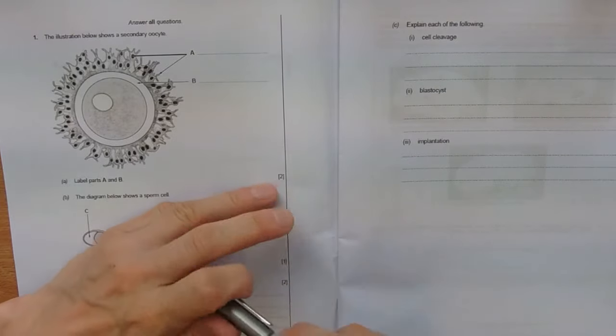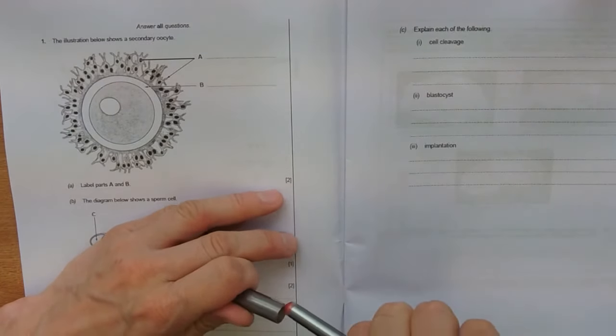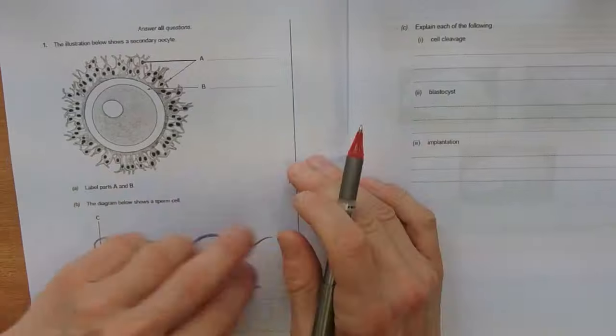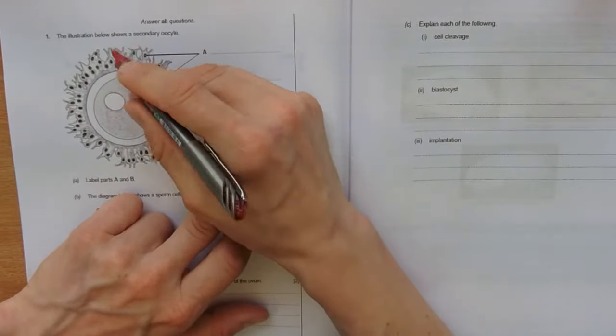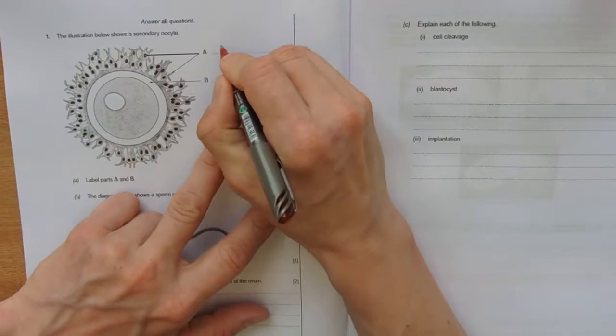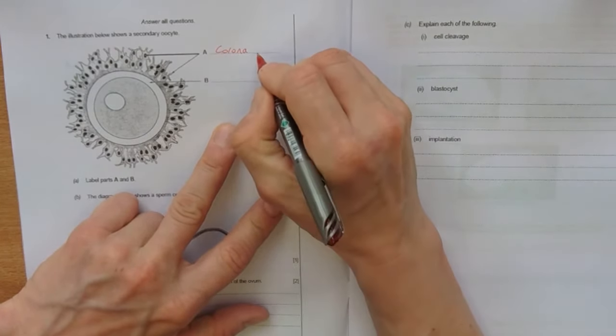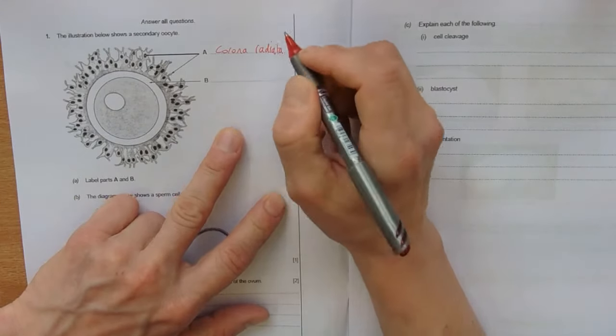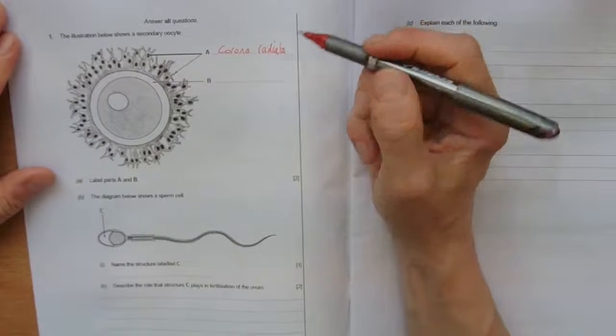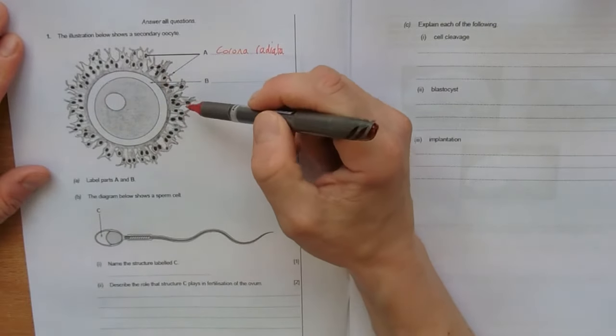A is the corona radiata. It's a bit like the corona of the Sun around the outside and it radiates out. Corona radiata. And these are made from granulosa cells.